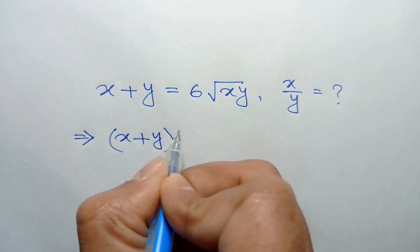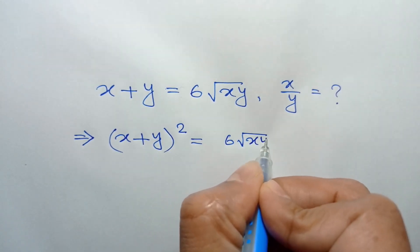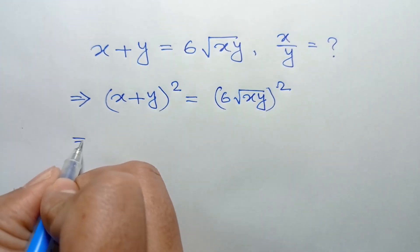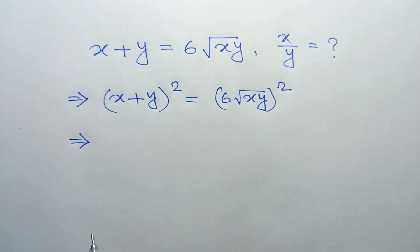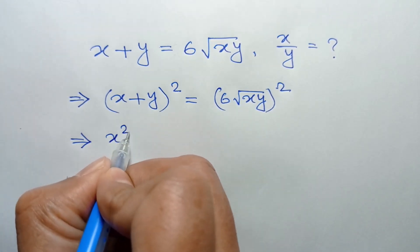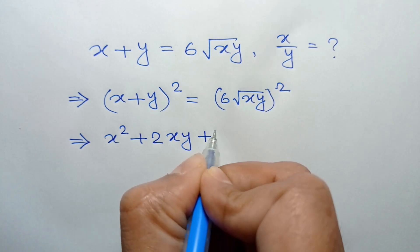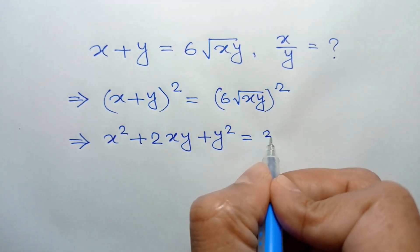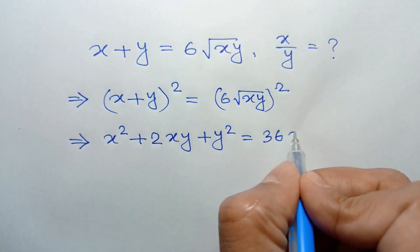Applying the formula a plus b whole square is equal to a square plus twice ab plus b square, we can write x square plus twice xy plus y square is equal to 36xy, since 6 squared is 36 and the square root and square cancel out, leaving xy.